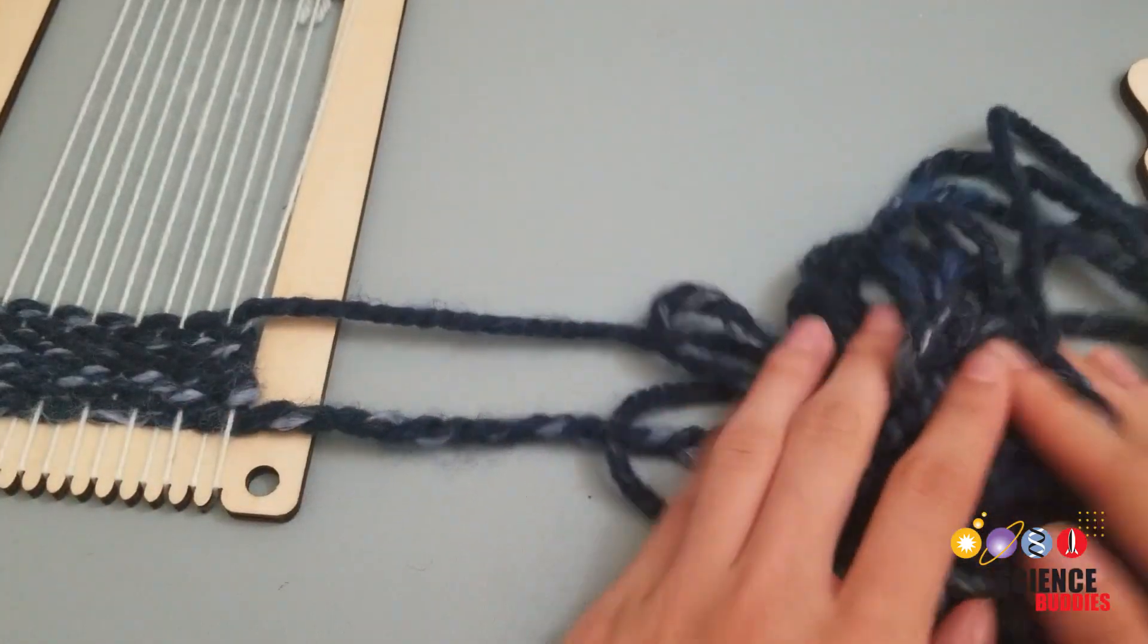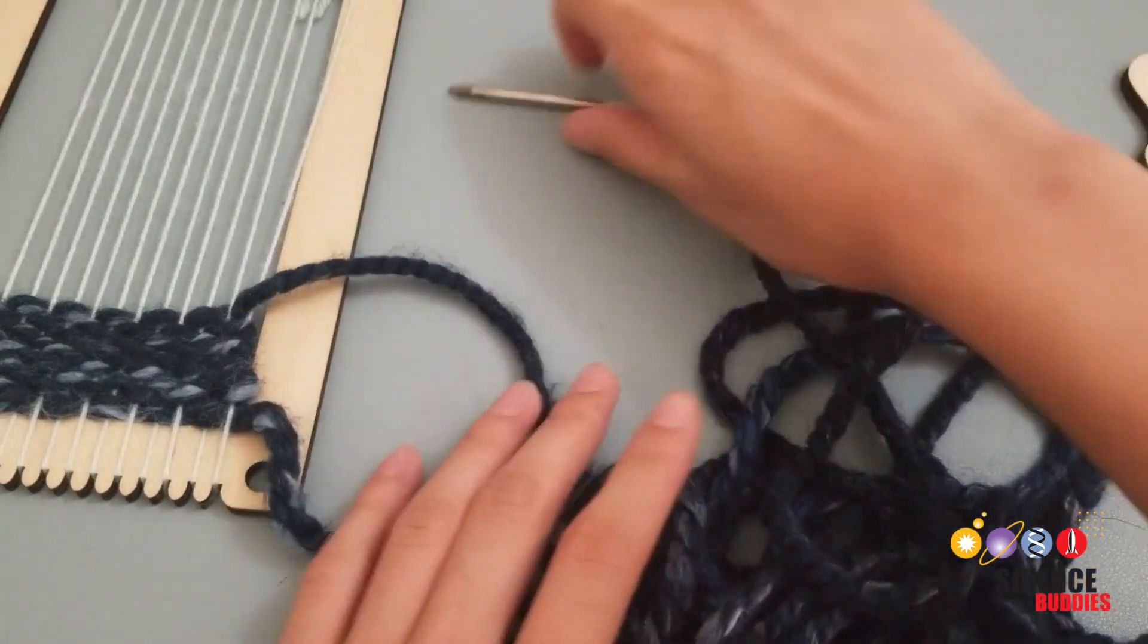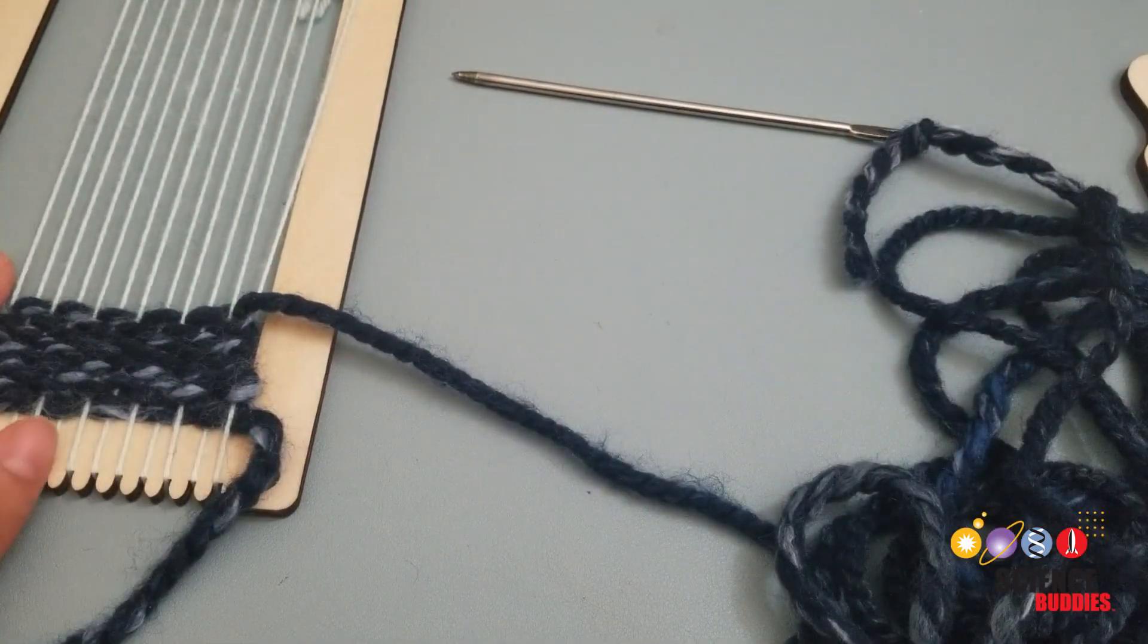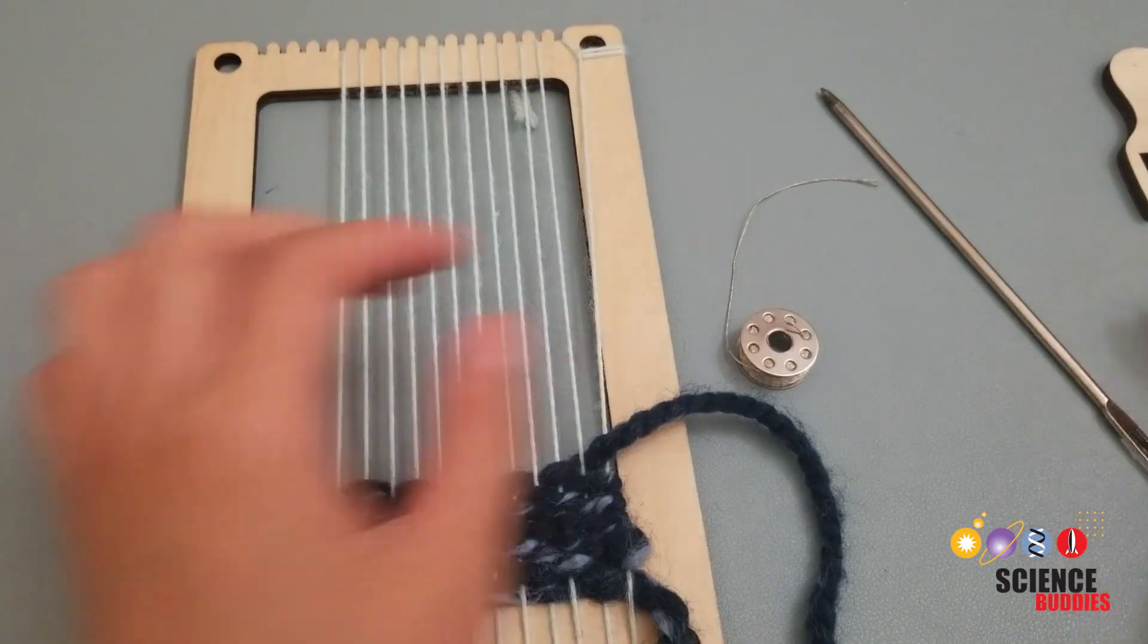Weave about an inch or two of yarn. If 6 feet of yarn is not enough, cut more yarn and tie it to the end of the yarn. Cut the excess yarn, leaving about a 2-inch tail. At the end of weaving the row's yarn, it is time to weave with conductive thread.